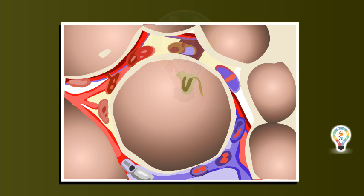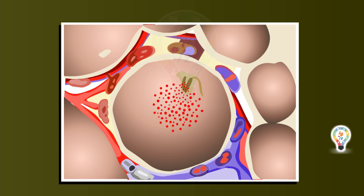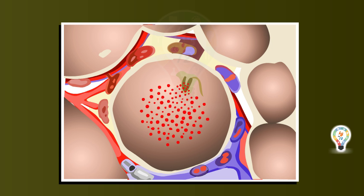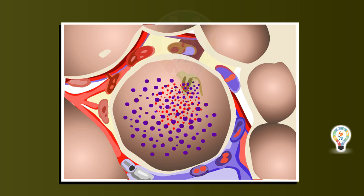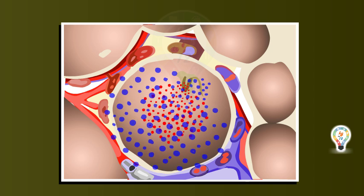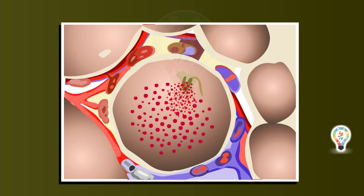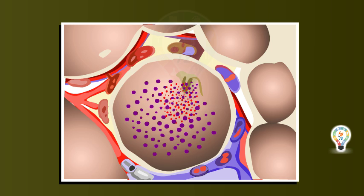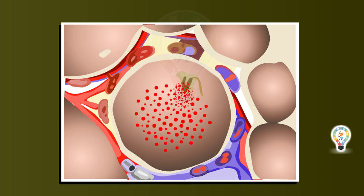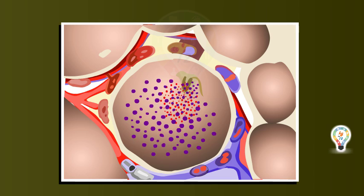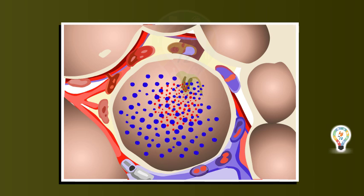By the process of diffusion, oxygen — shown as red spores in the image — moves from the air in the alveoli into the capillaries. The blue spores represent carbon dioxide, which moves from the capillaries into the alveoli and is exhaled. This is how respiration takes place in human beings.